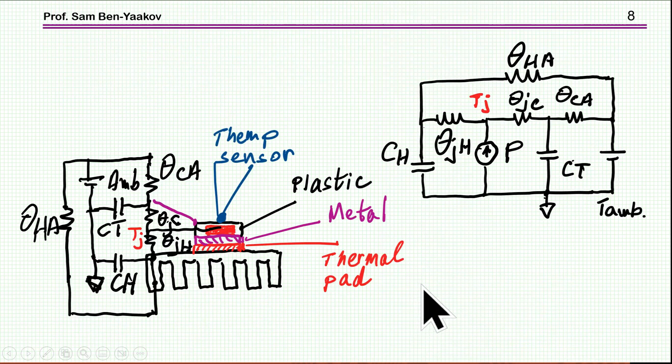However, in our case it's a little bit more complicated. We do have the chip here which is the source of the power, here it is, the power dissipated. And then we have to the output, to the ambient this way, so we have some thermal capacity here and then thermal resistance to the ambient which is outside.